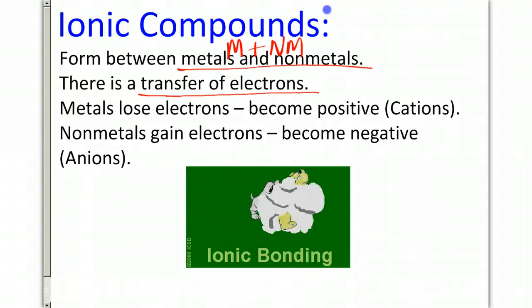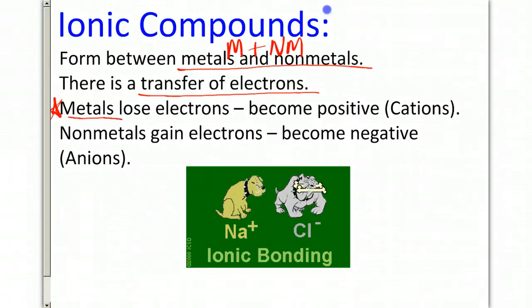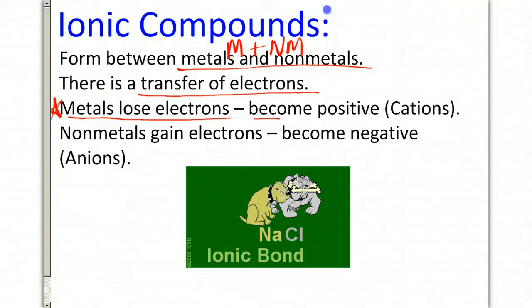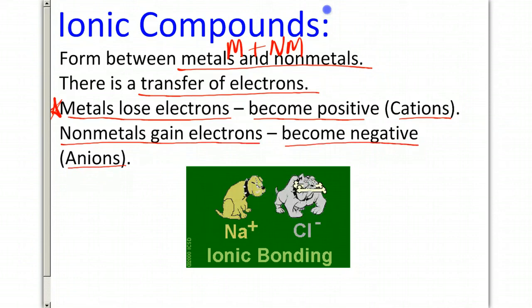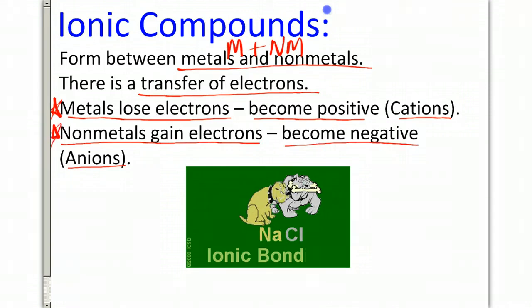Recall again, there's a transfer of electrons. You should know that metals lose electrons and they become positive cations. Non-metals will gain electrons and become negative anions. This is absolutely ridiculously essential and important to know.